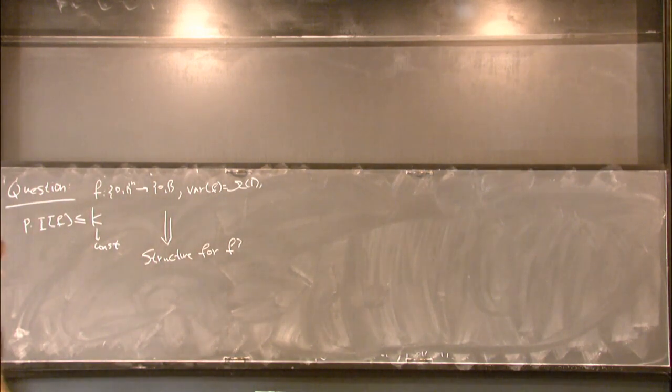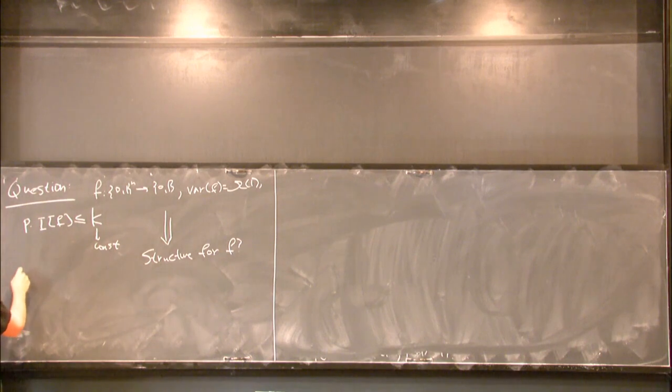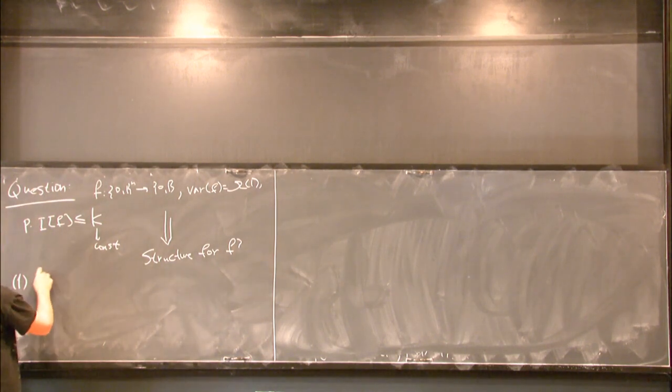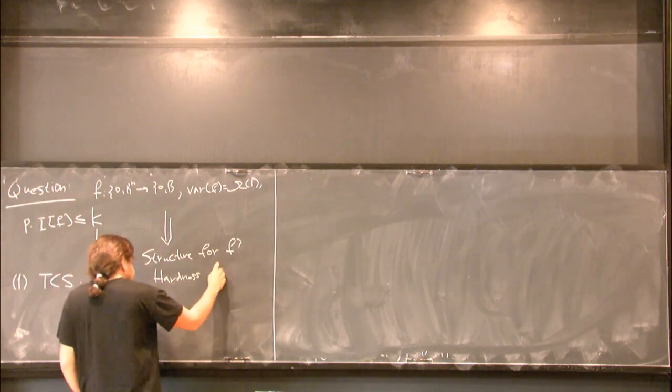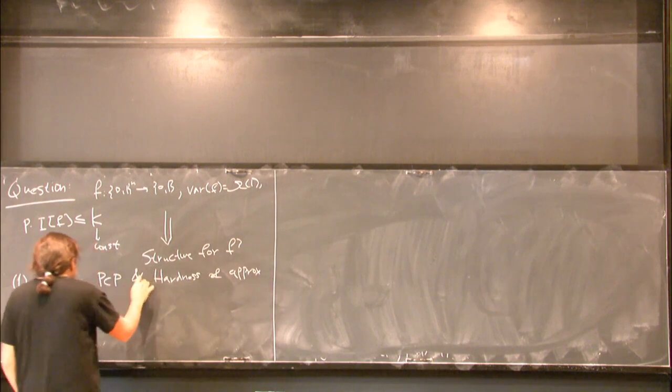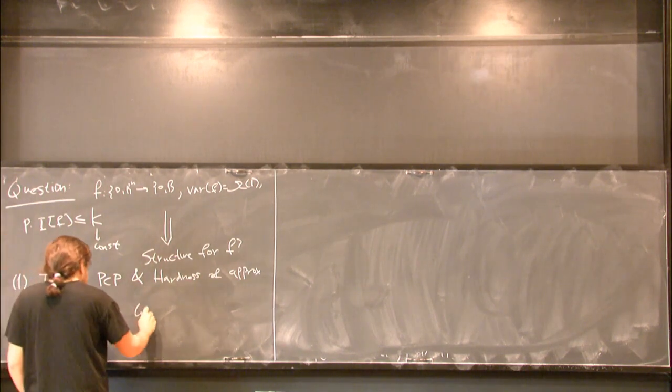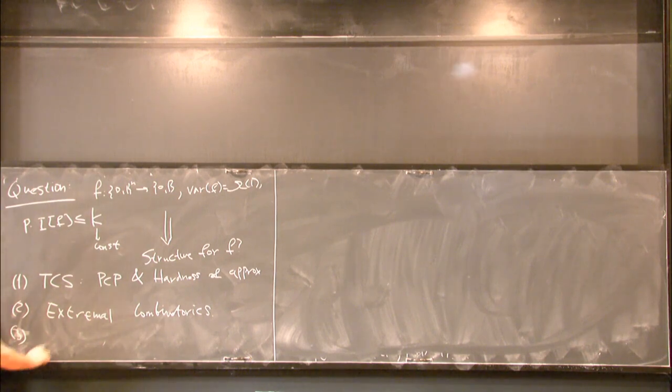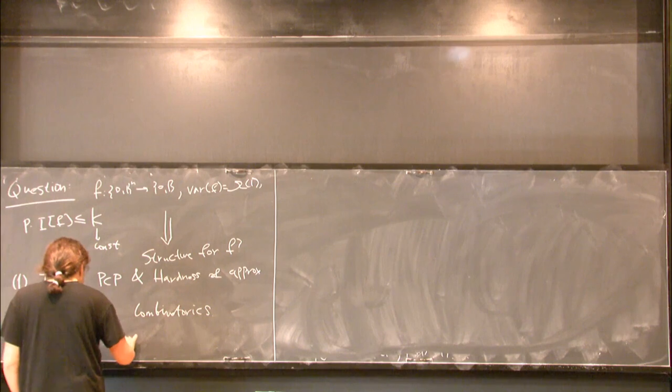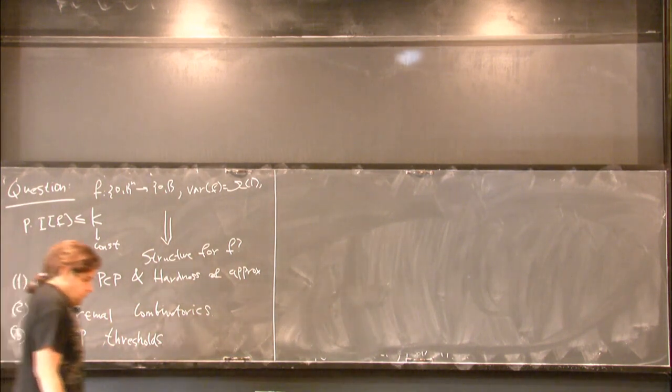What can you tell me about the function in this case? This is the basic question that we want to study. Why do we want to study this question? This question appears naturally in several places in discrete mathematics. I'm only going to say some buzzwords due to time constraints. In TCS, it appears in PCPs and hardness of approximation. It also appears in extremal combinatorics, and also in the study of sharp thresholds.